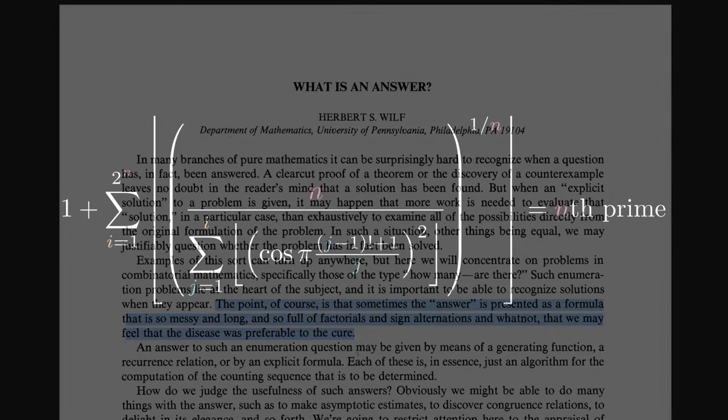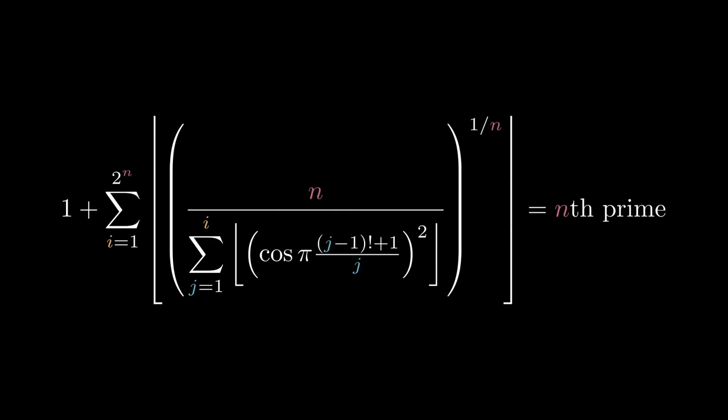Wilf doesn't mention Willans' formula specifically, but his description hits pretty close to home for Willans. Willans' formula definitely doesn't pass Wilf's test for being an answer to the question what is the nth prime number, since there are faster and less complicated ways to compute the primes.